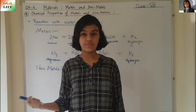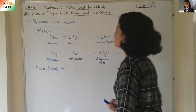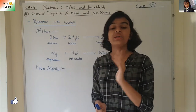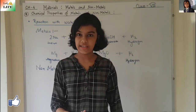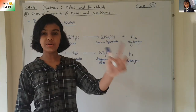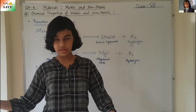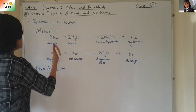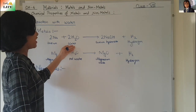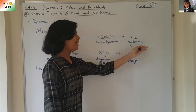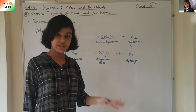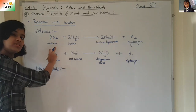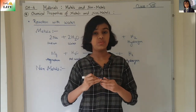First let's start with metals. Metals react vigorously with water to form a metal hydroxide and hydrogen gas. For example, sodium is a metal — sodium reacts with water to form sodium hydroxide and hydrogen gas. Sodium hydroxide is the hydroxide of sodium metal, so this is how metals react with water.